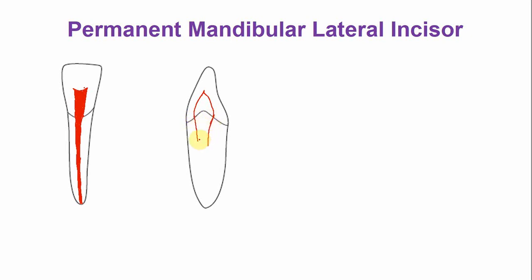The apical foramen may exit either at the tip of the root, or on the labial side.